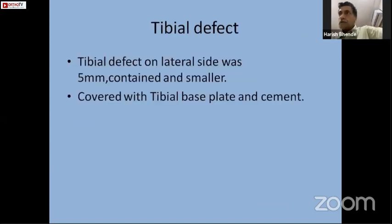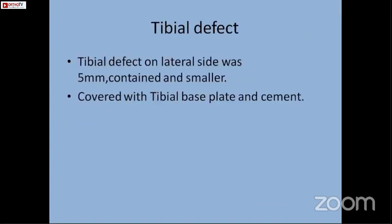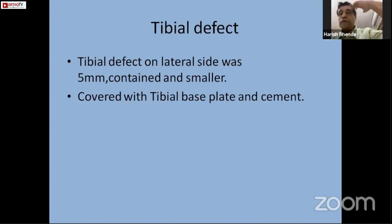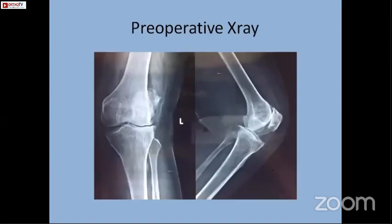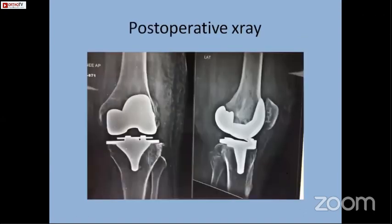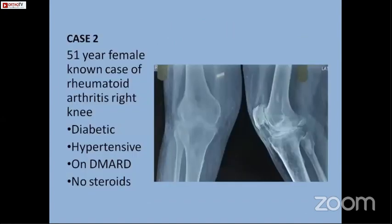The tibial defect was small — up to 5 mm after cutting the proximal tibia. This was the post-operative x-ray. This is now three years' follow-up, and the post-operative range of motion is up to 110 degrees. The patient is walking comfortably. The second case is of a similar variety.